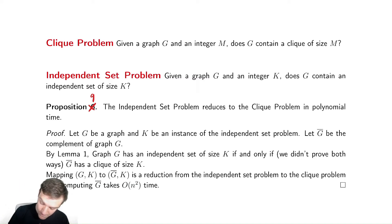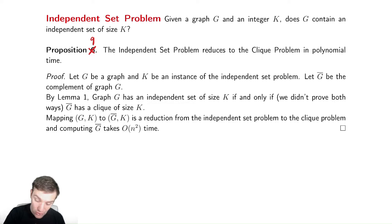And this reduction from independent set to clique takes O of N squared time to compute G bar, O of N squared time by computing the adjacency matrix and then twiddling all the bits in the adjacency matrix to switch them from zeros to ones and ones to zeros. Takes big O of N squared time. So this reduction takes polynomial time and it works that if I have an independent set, then I have a clique, and if I have a clique, then I have an independent set.